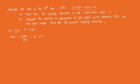We equate that to P, so P = Q + 10. Then rearranging with respect to Q — transposing 10 to the other side — we get Q = P − 10. So we have that form from the first-order condition.